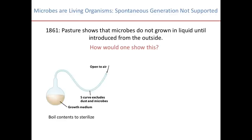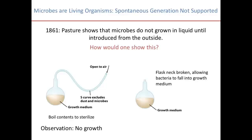What Pasteur did was a similar experiment to the previous one where sterile broth was in a container — except that instead of having the container directly open to the air, he set it up with an S-shaped tube. That allowed air to get in, but the curve made it extremely difficult for microbes to enter the broth. And as you might imagine, no growth was observed. When the flask neck was broken, that allowed bacteria to fall into the growth medium and growth was observed.